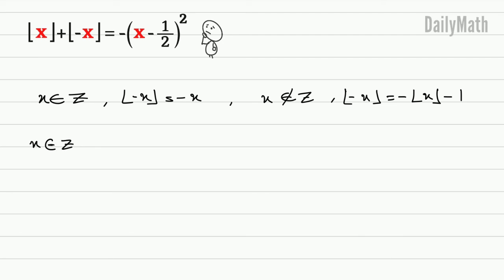is an integer, floor of x is x, floor of negative x is negative x, and that's equal to negative x minus 1/2 to the power of 2. These two cancel out, that means this is equal to